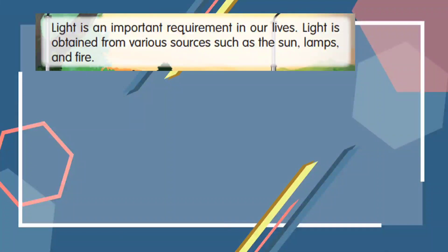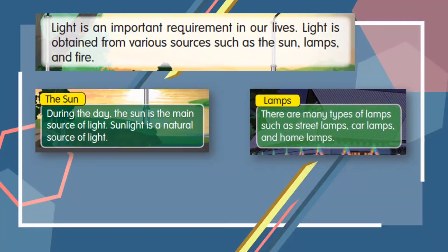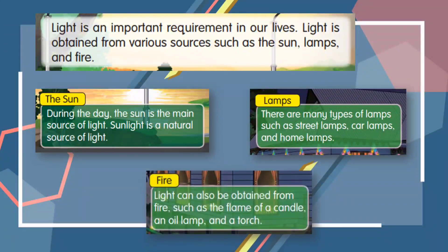Light is an important requirement in our lives. Light is obtained from various sources such as the sun, lamps and fire. During the day, the sun is the main source of light. Sunlight is a natural source of light. There are many types of lamps such as street lamps, car lamps and home lamps. Light can also be obtained from fire such as the flame of a candle, an oil lamp and a torch.